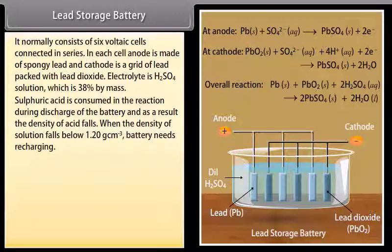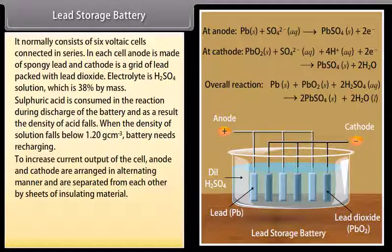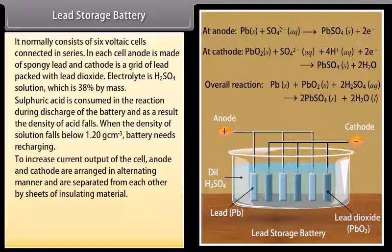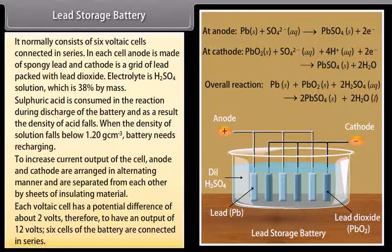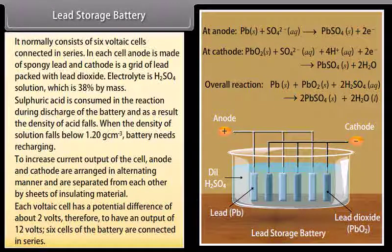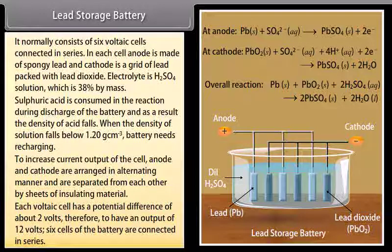When electrical energy is supplied to the battery from an external DC source, cell operates like an electrolytic cell and chemical reactions take place, but now the electrode reactions are reversed from those that occur during the discharge of the battery. To increase current output of the cell, anode and cathode are arranged in alternating manner and are separated from each other by sheets of insulating material. Each voltaic cell has a potential difference of about 2 volts. Therefore, to have an output of 12 volts, 6 cells of the battery are connected in series.